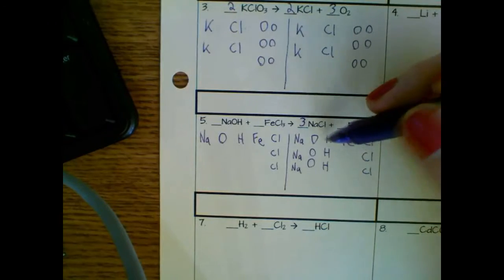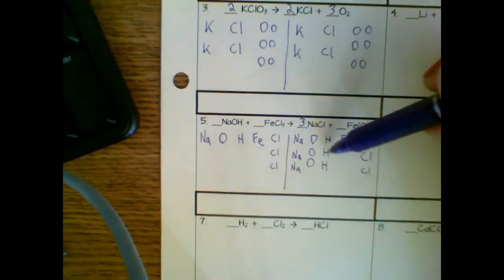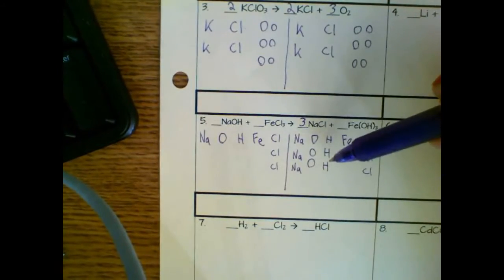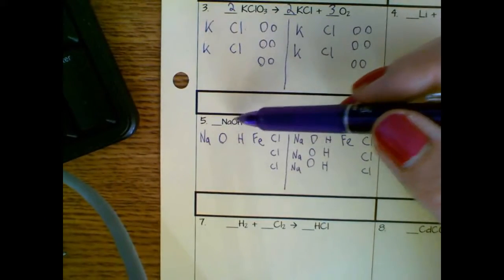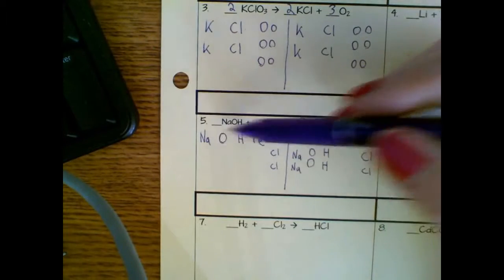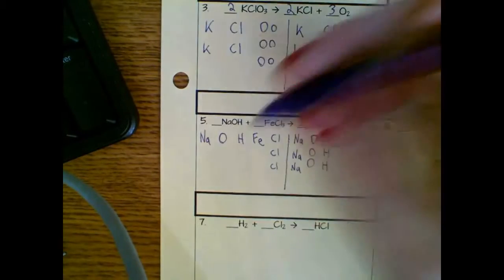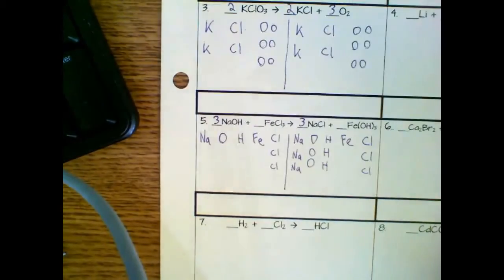I'm going to go back to the other side now. So I know that I have three O's and three H's over here. Well, if I look at this, I've got NA, I've got O, and I've got H. I need all of that to be multiplied by three. So I'm going to go ahead and put my three in here.